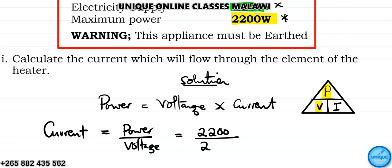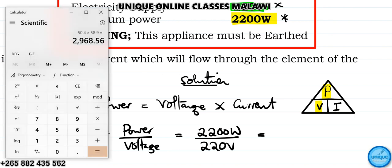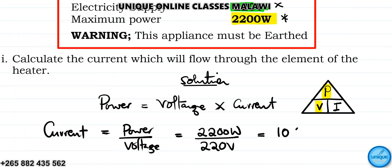Current equals power divided by voltage. Our power is 2,200 watts divided by the voltage which is 220 volts. So 2,200 divided by 220 gives us the answer of 10 amps.